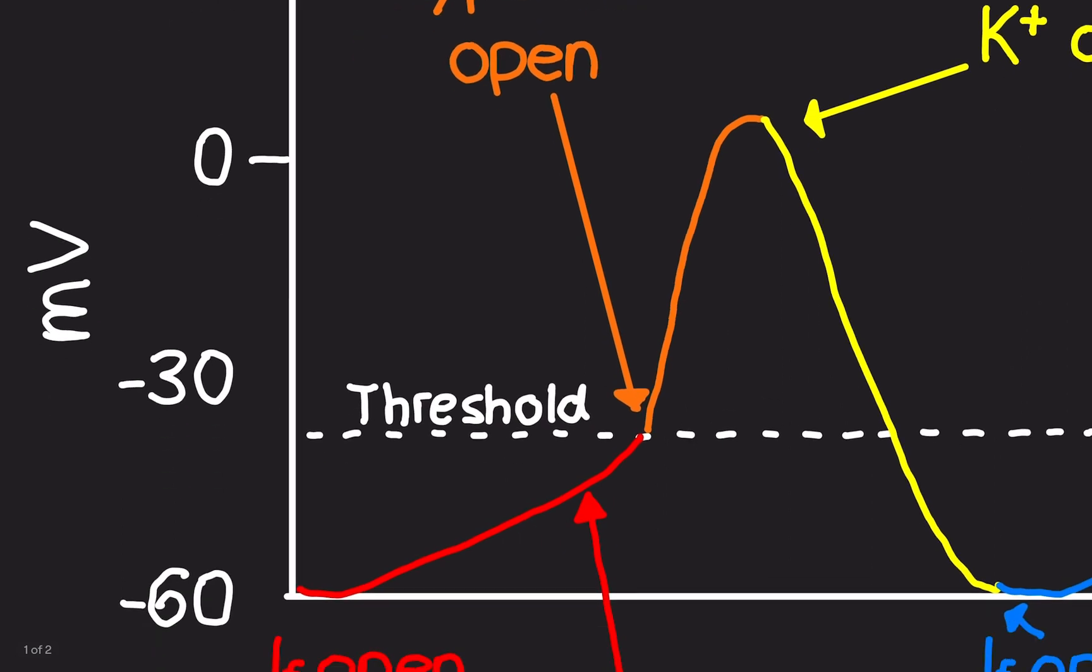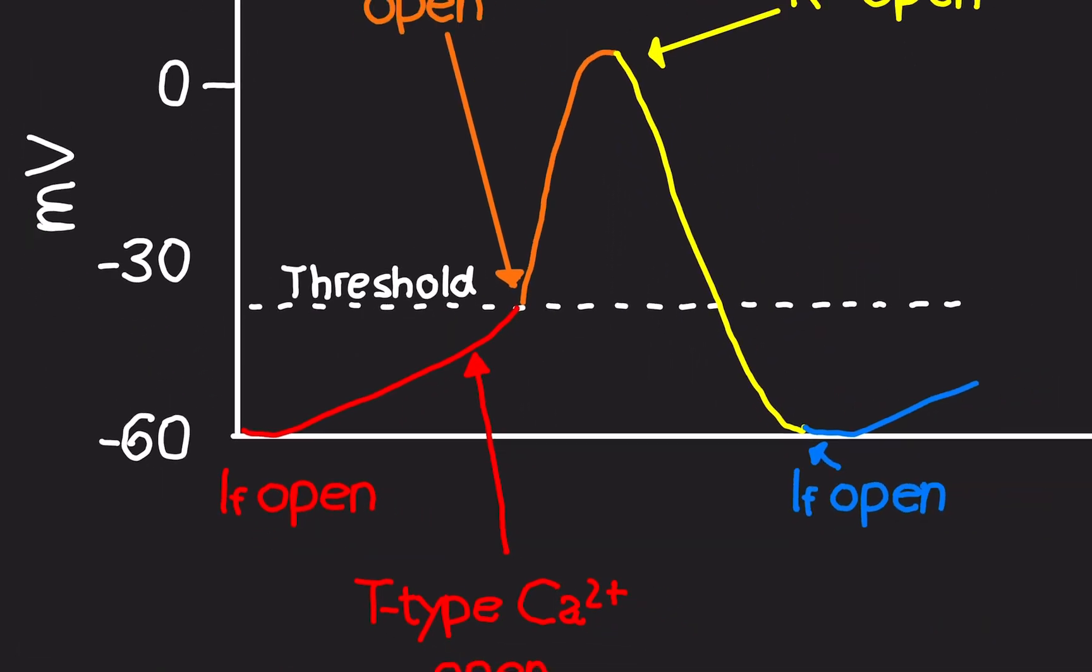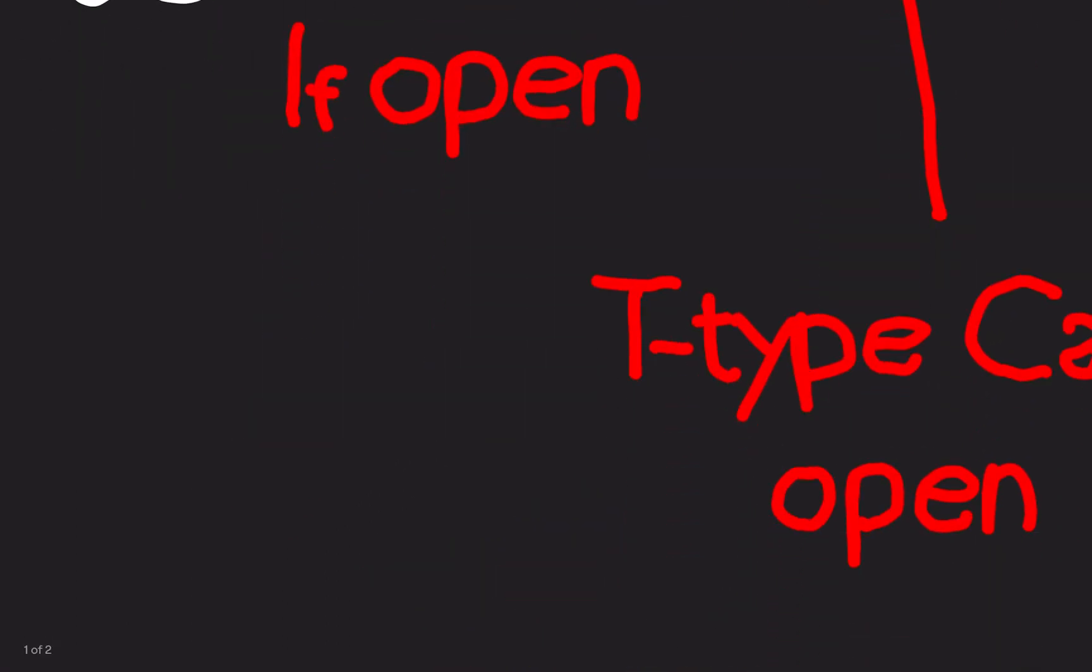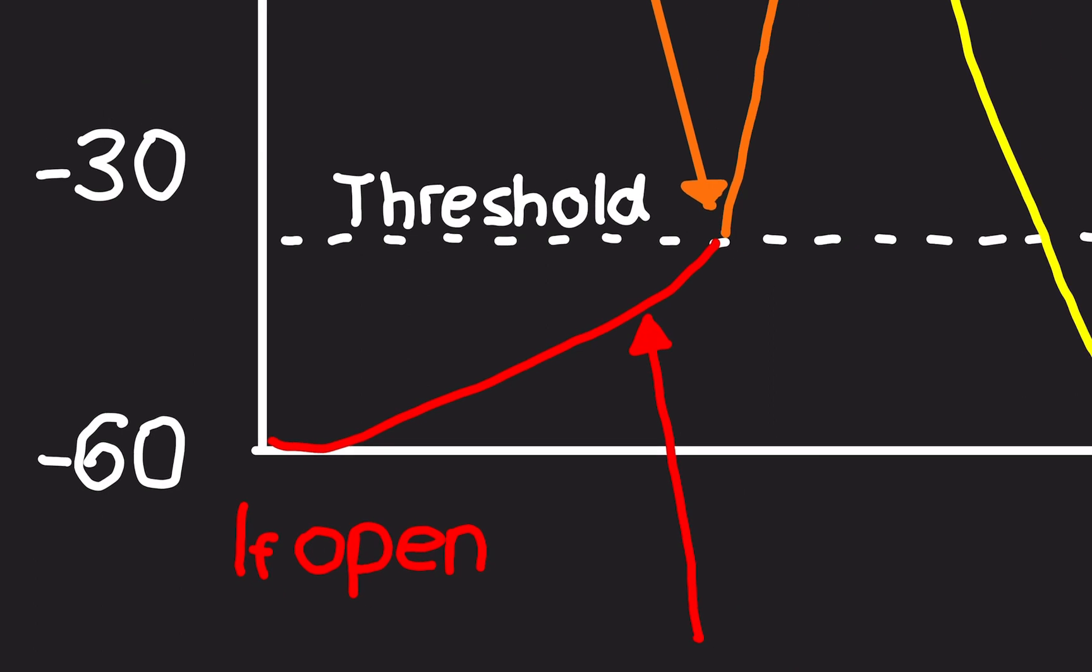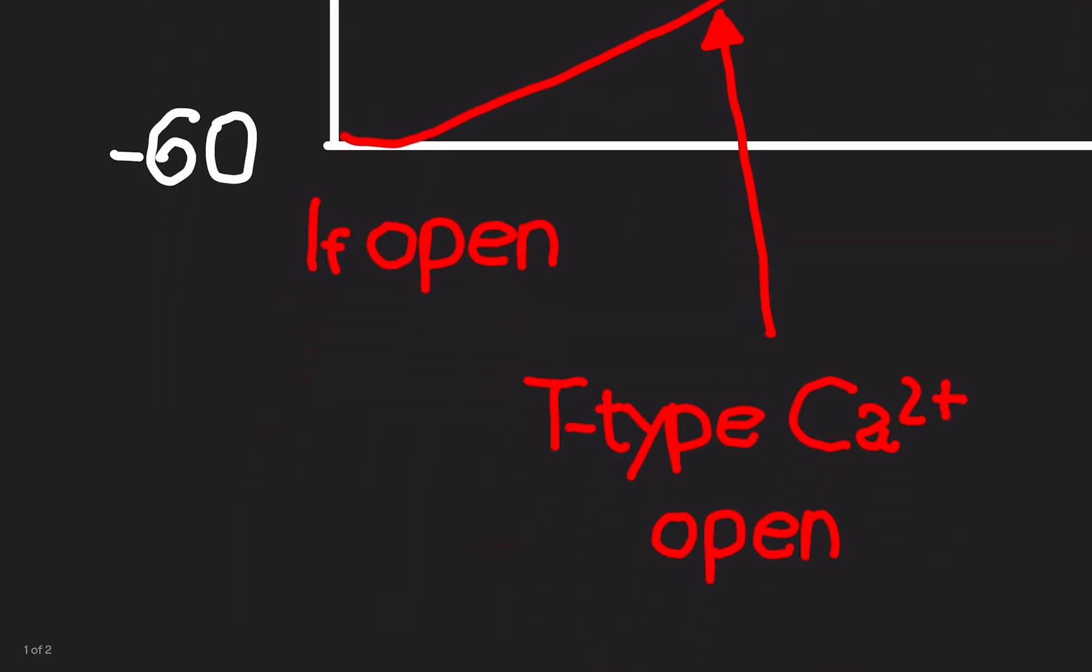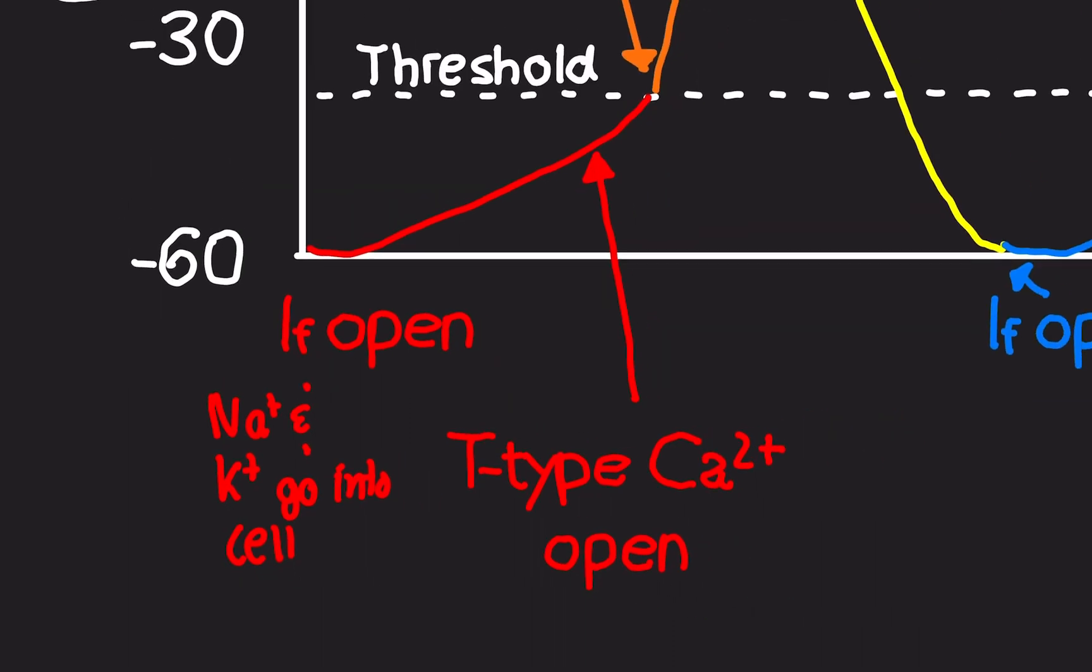So that's why it's called funny channels. So what's happening here is the funny channels open. So in other words, what's happening in the cell? Well, notice that we're going up in potential. We're going from negative 60 to negative 30. So we're going up. So ions must be going inside the cell. So since it's a funny channel, sodium and potassium go into cell.